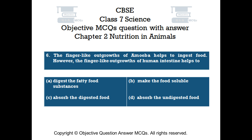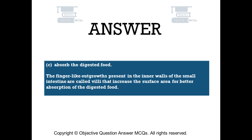Question number 6. The finger-like outgrowths of amoeba help to ingest food. However, the finger-like outgrowths of human intestine help to: Option A: Digest the fatty food substances. Option B: Make the food soluble. Option C: Absorb the digested food. Option D: Absorb the undigested food. The right answer is Option C: Absorb the digested food. The finger-like outgrowths in the inner walls of the small intestine are called villi, which increase the surface area for better absorption of digested food.